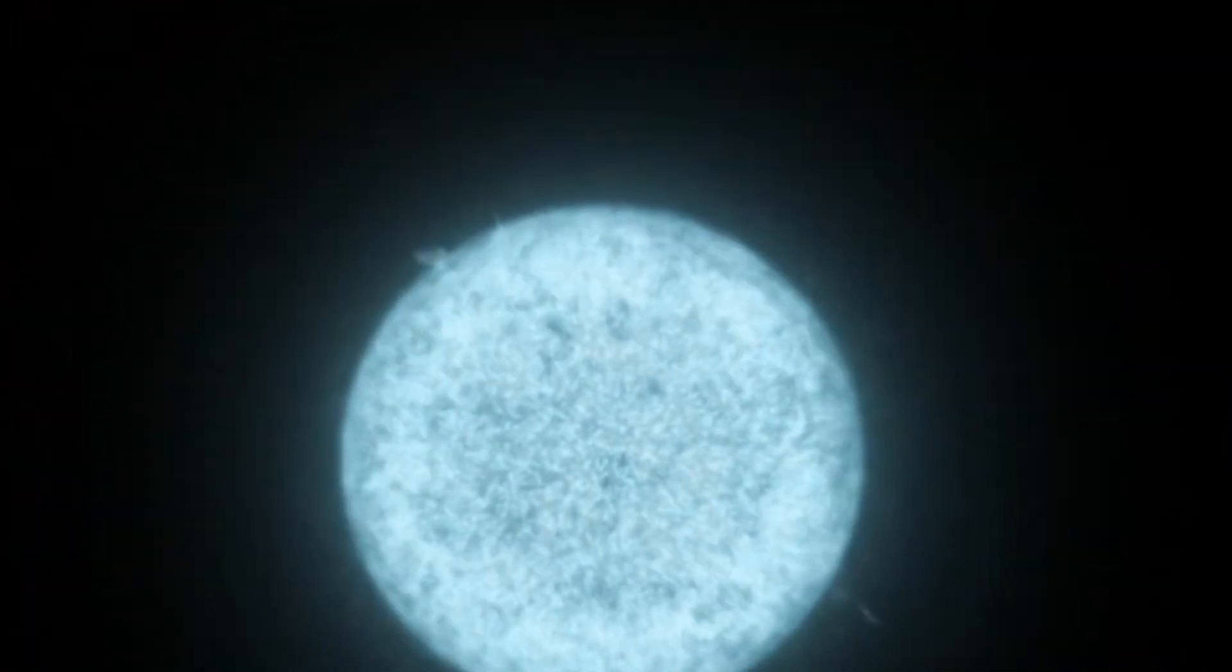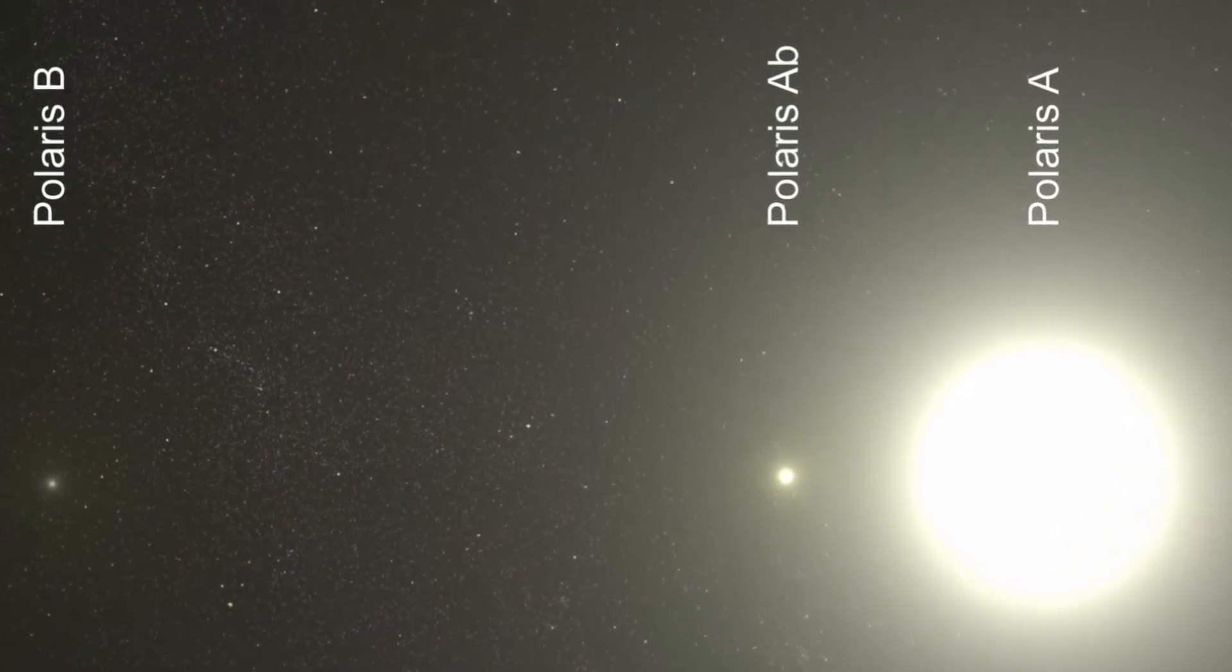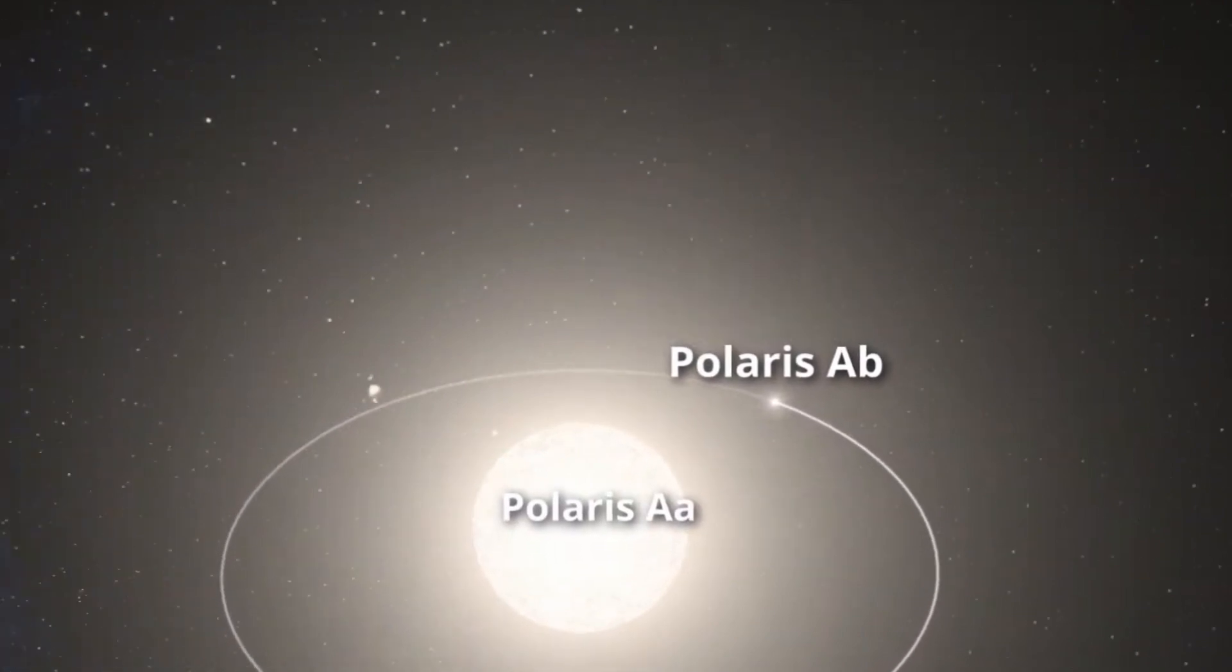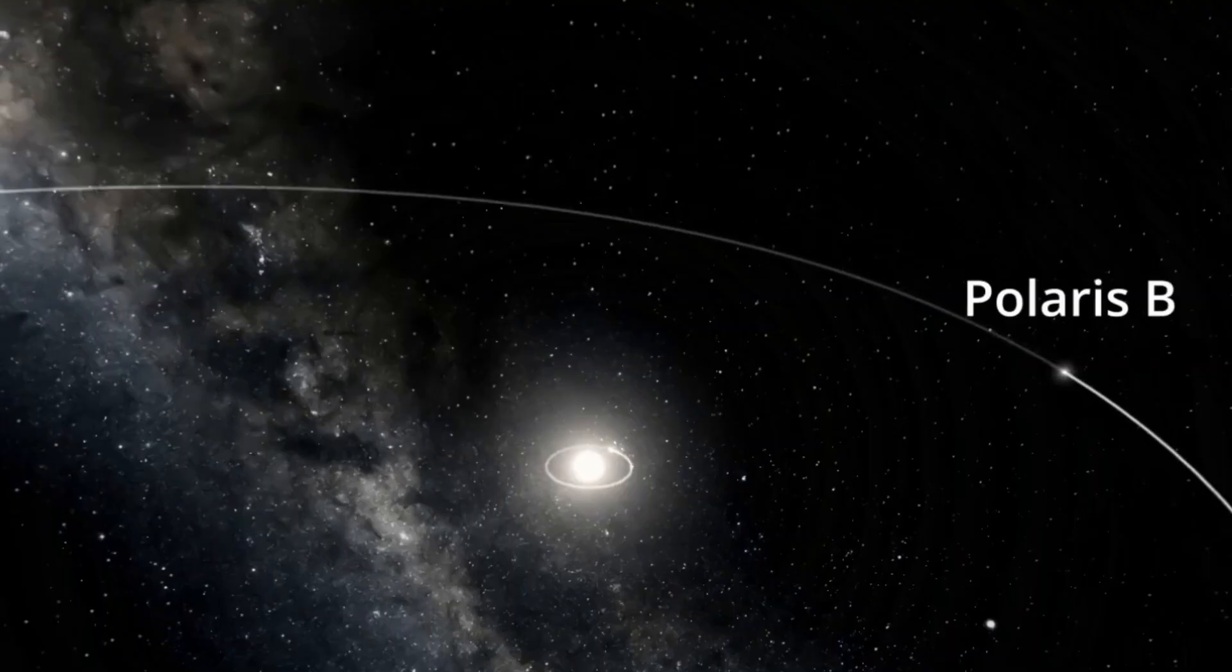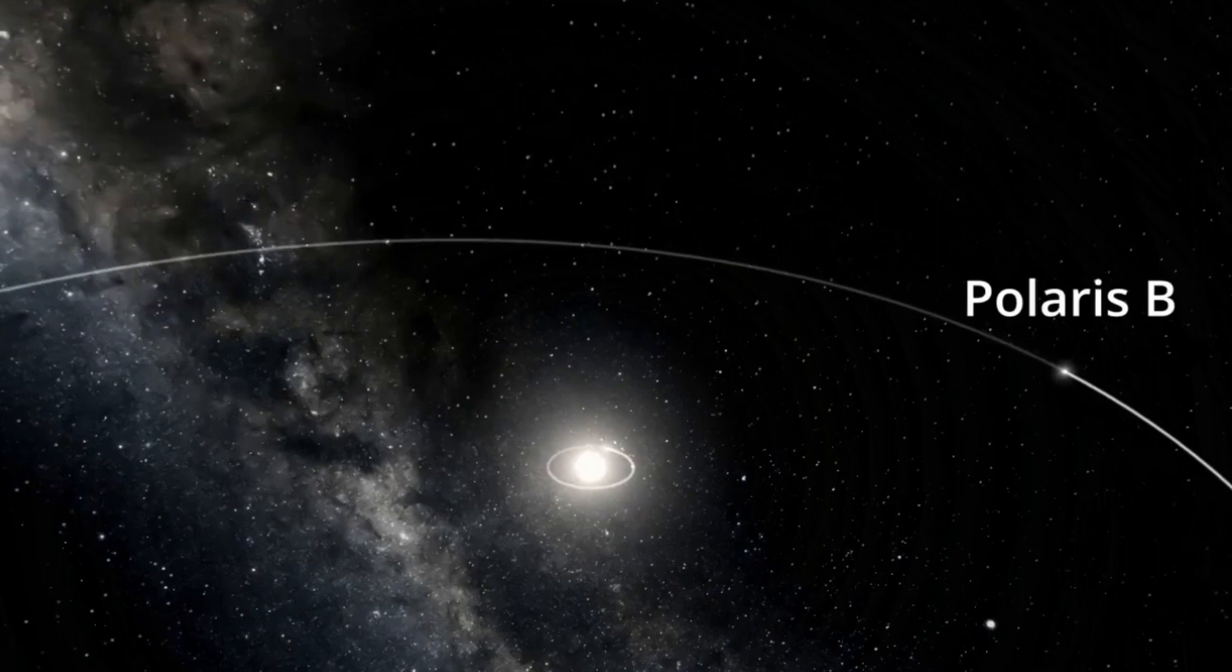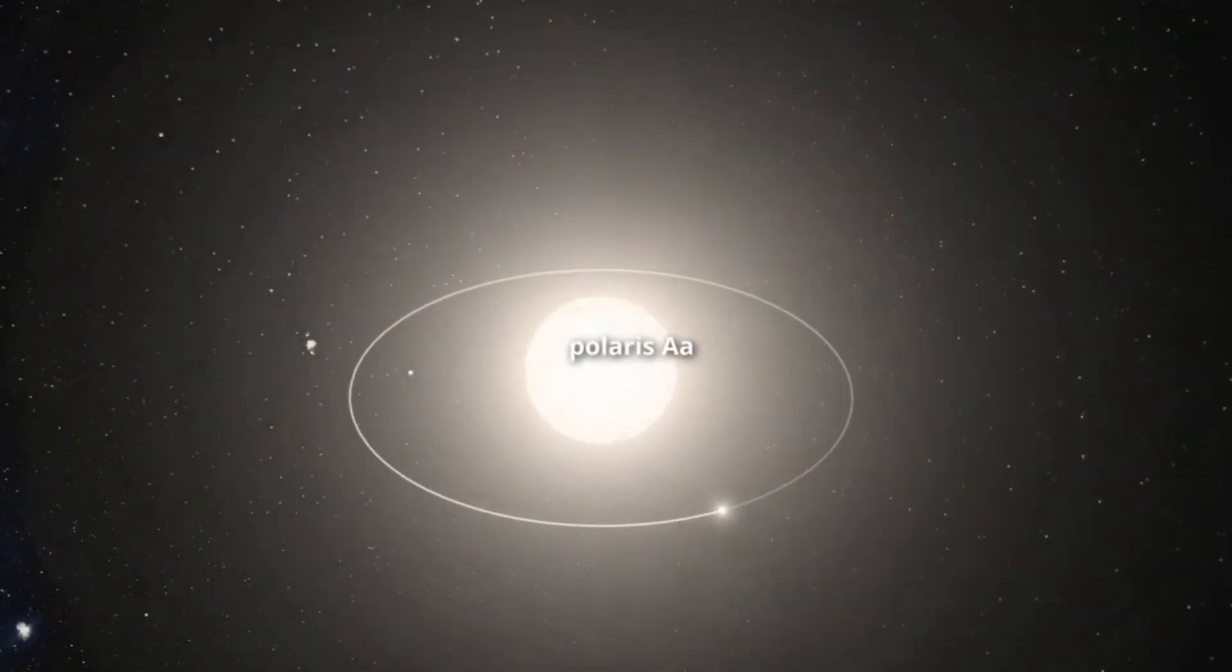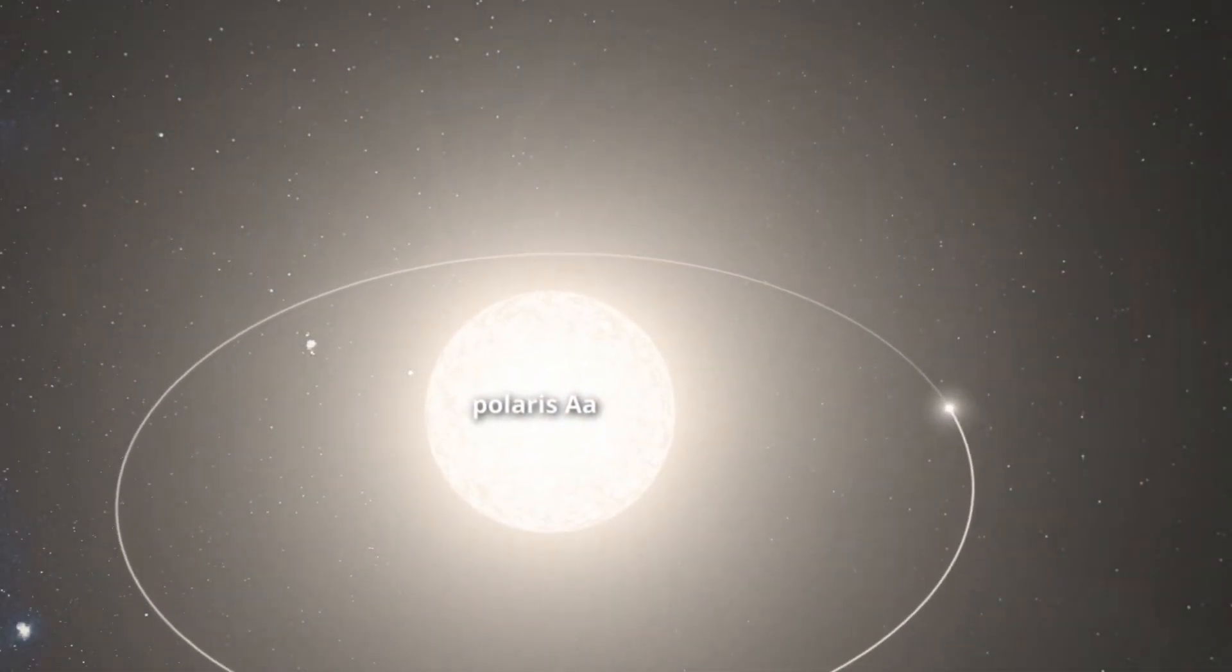It is often perceived as a solitary star, but it is actually part of a complex triple star system. The primary stars, Polaris AA and Polaris AB, appear as a single star to the naked eye, while a third companion, Polaris B, orbits the binary pair. The interactions among these stars create a gravitational pull, shaping their orbits and influencing their behaviors.